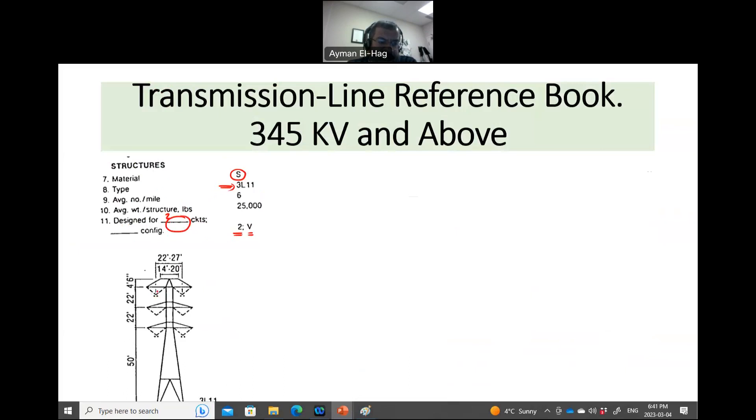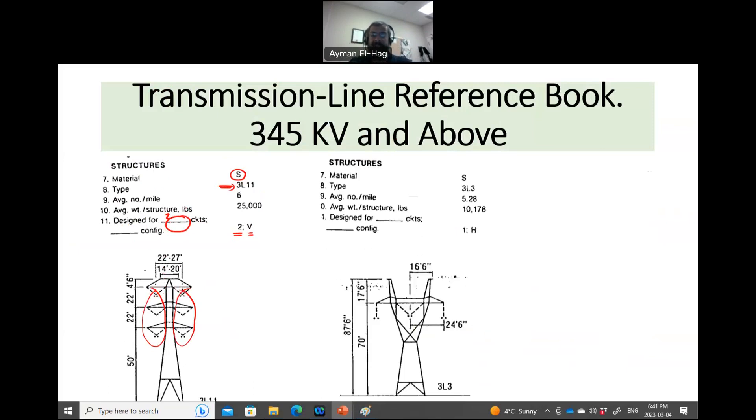And you see here, there is one circuit here, and there is another circuit there. And, as I said, this is a lattice type of tower. There is another lattice type of tower, made from steel, 3L3. This is the design, 3L3. And again, the same thing. But this is for single circuit, and it's an H type. H type means it looks like the letter H.